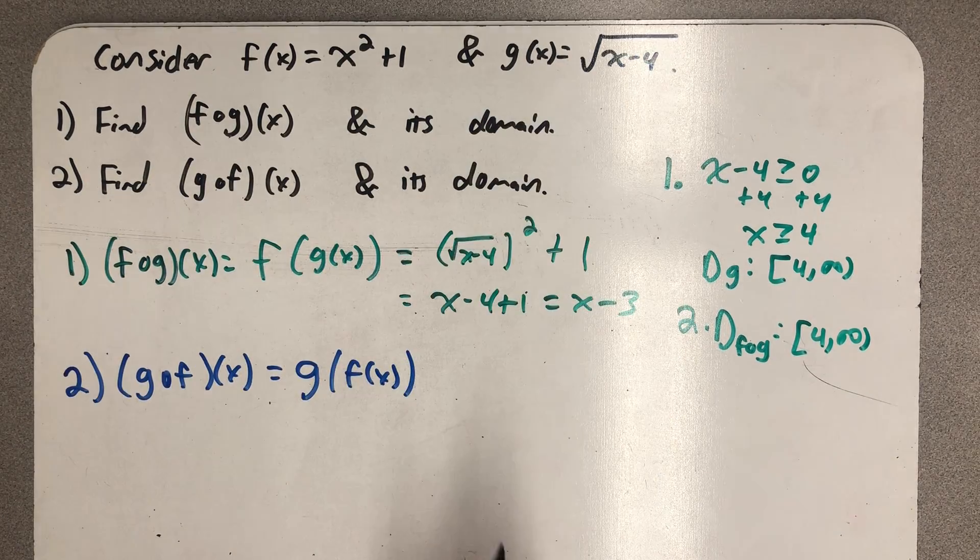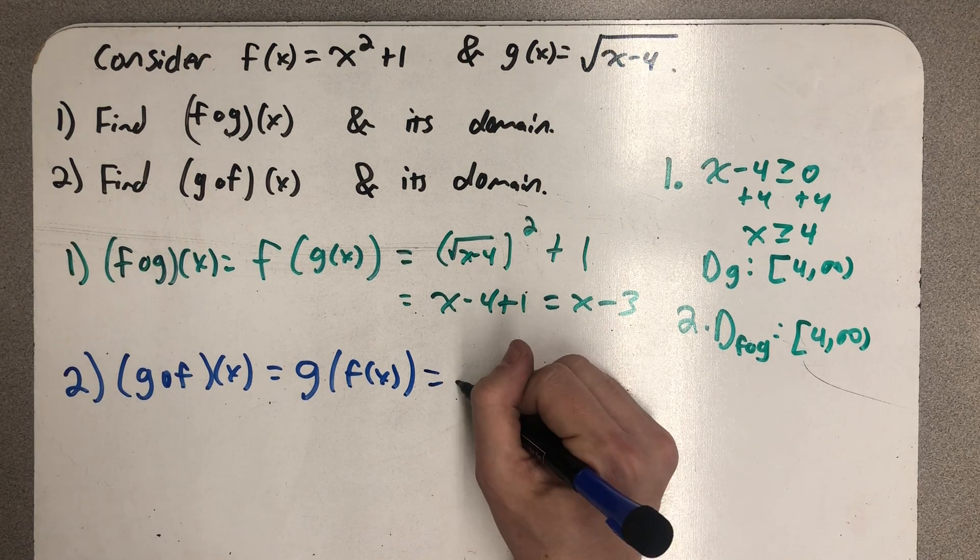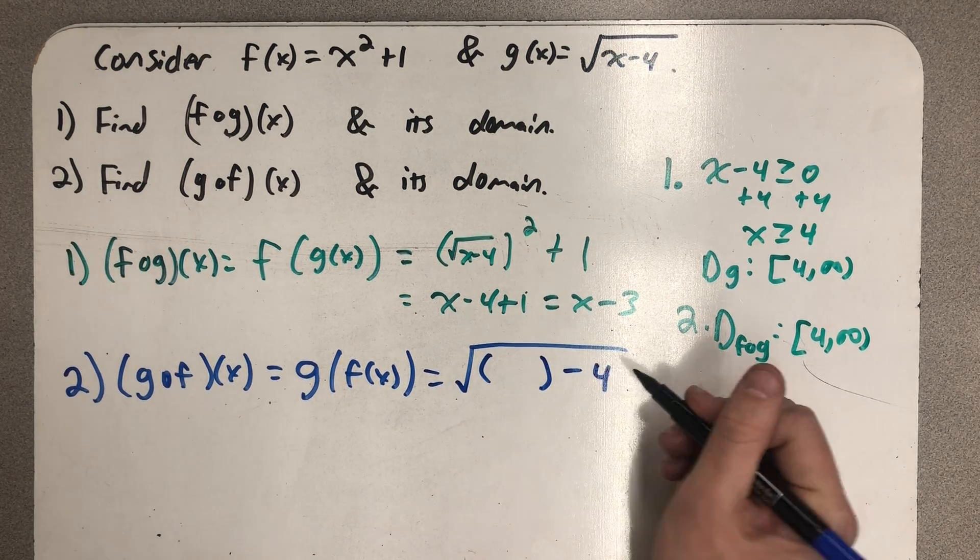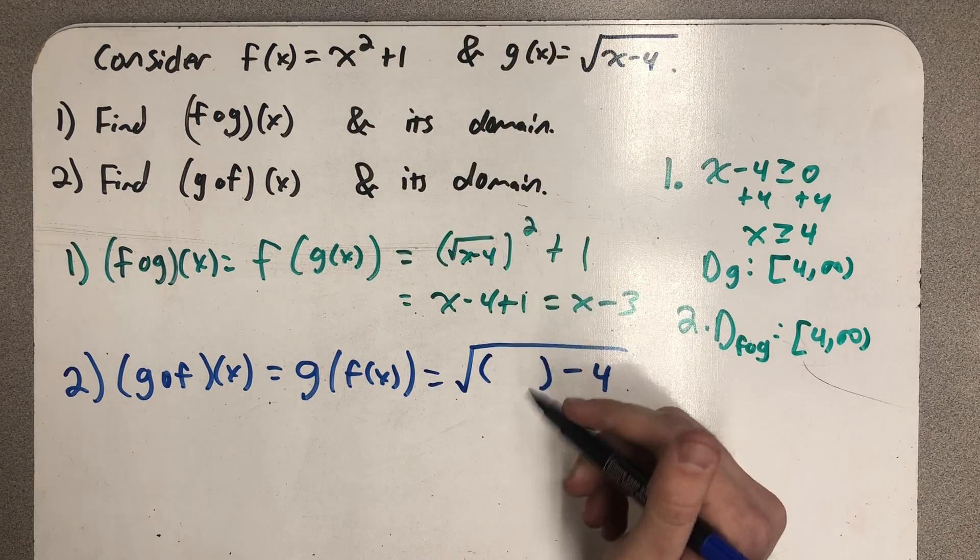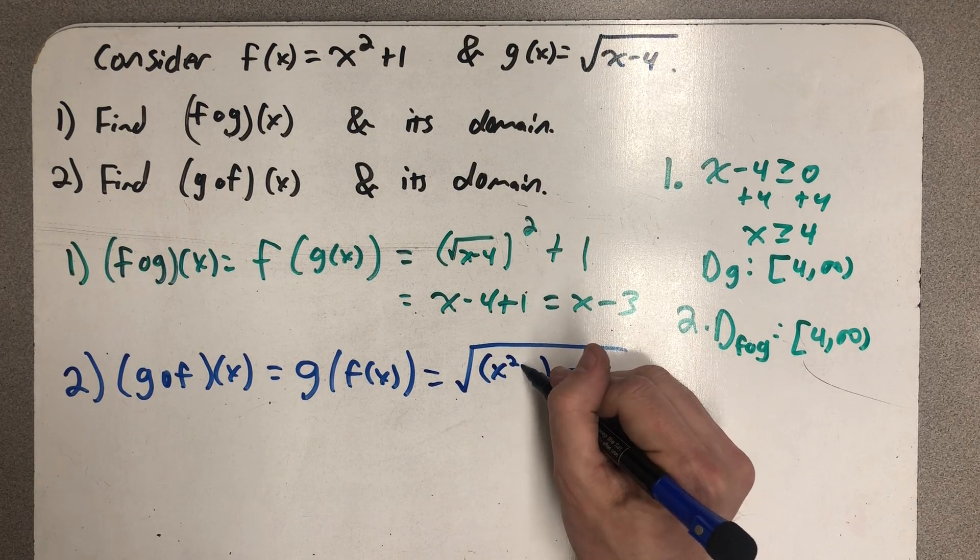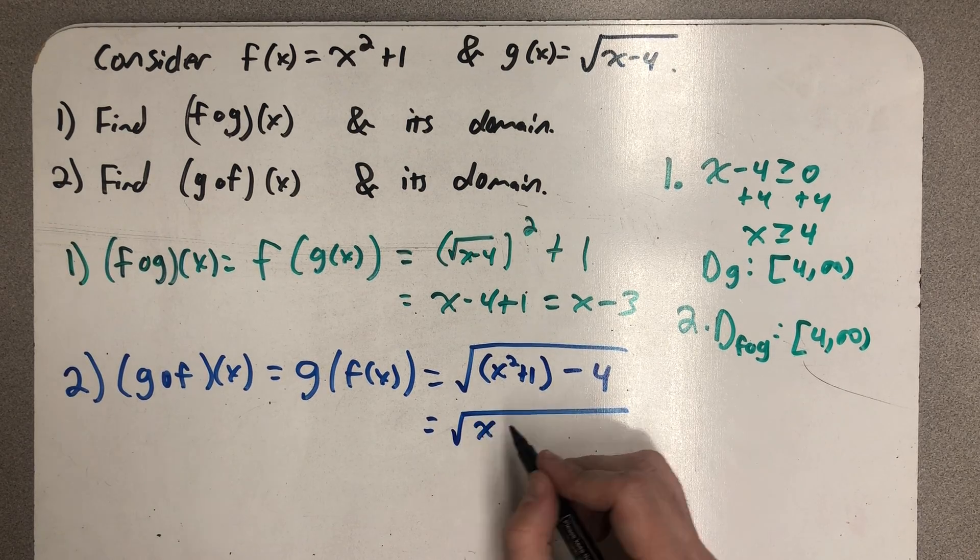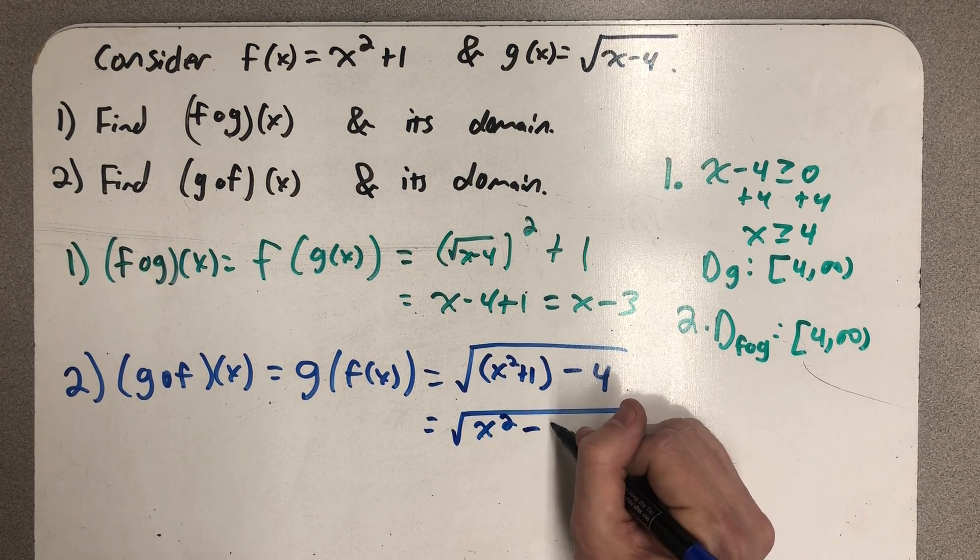This time, f is my inside function and g is my outside function. So that's a function that takes the square root of something minus 4. And what's that something? Well, it's x squared plus 1. Simplify that and I have the square root of x squared minus 3.